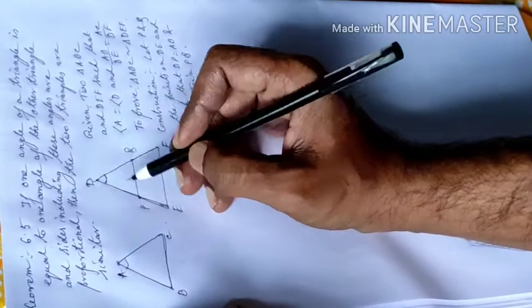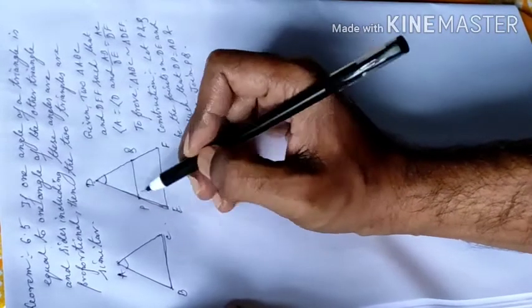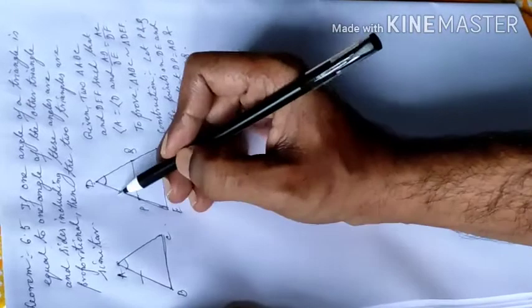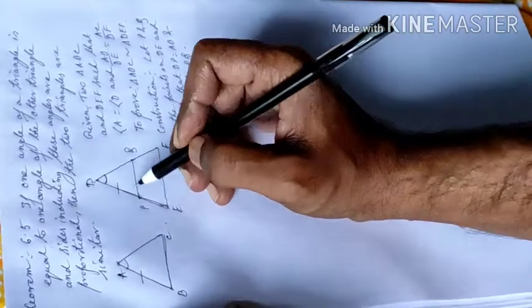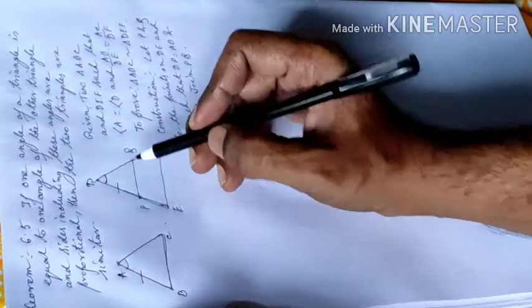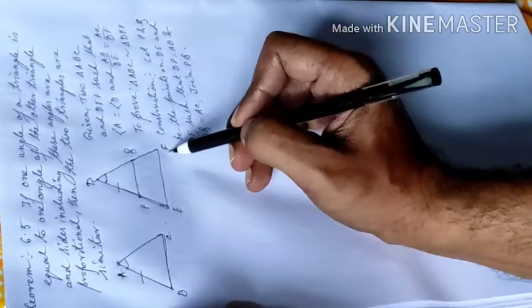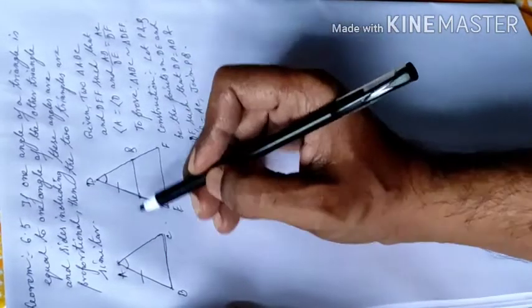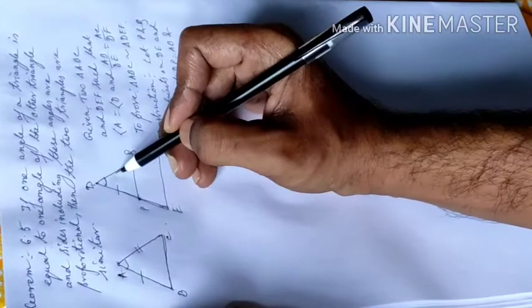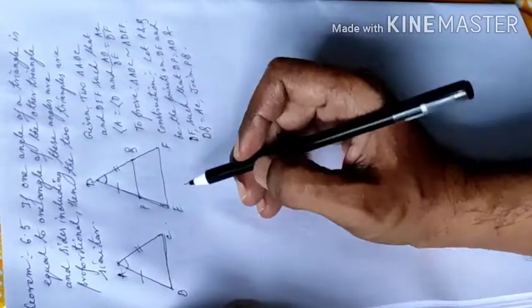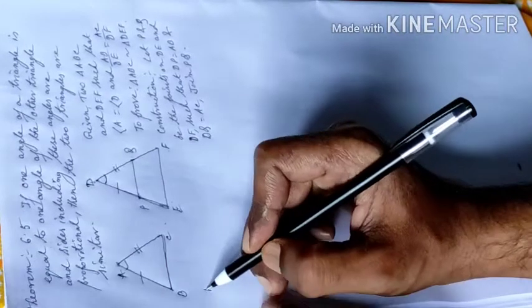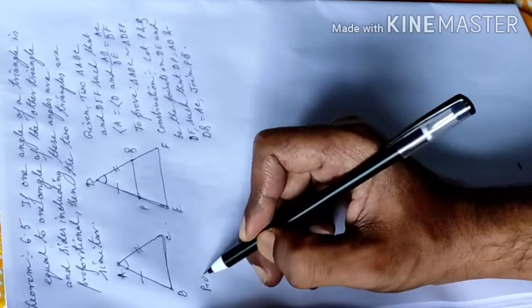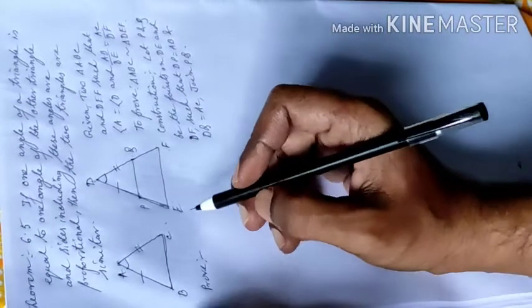Take a point P on DF such that AB is equal to DP, and take another point Q on DF such that AC is equal to DQ. Now proof: since